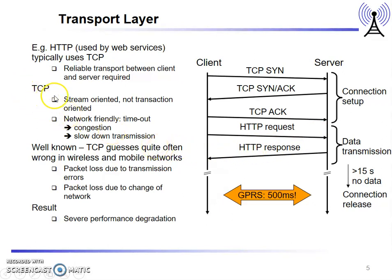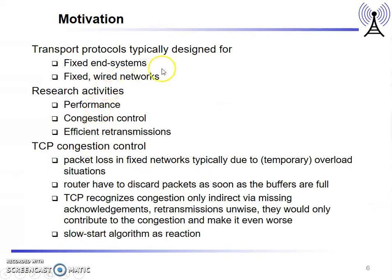TCP is stream-oriented, network-friendly, and controls congestion by slowing down transmission. However, we cannot use standard TCP in wireless and mobile networks. The main reasons are packet loss due to transmission errors and packet loss due to change of network, resulting in severe performance degradation. TCP is normally designed for fixed end systems and wired networks.